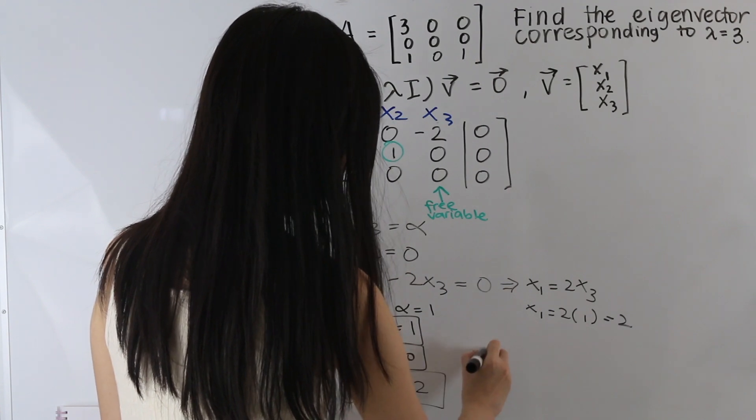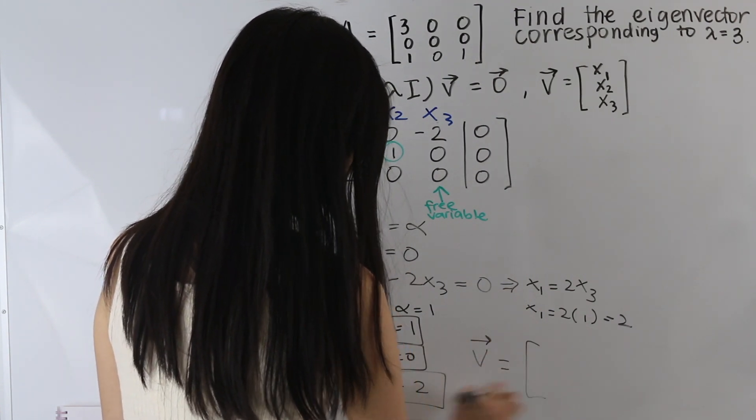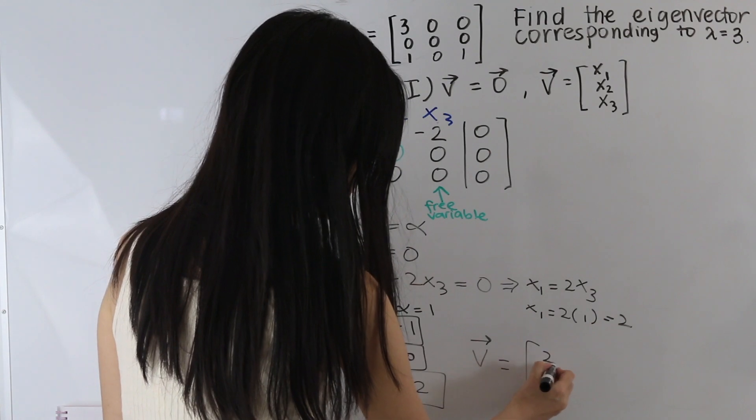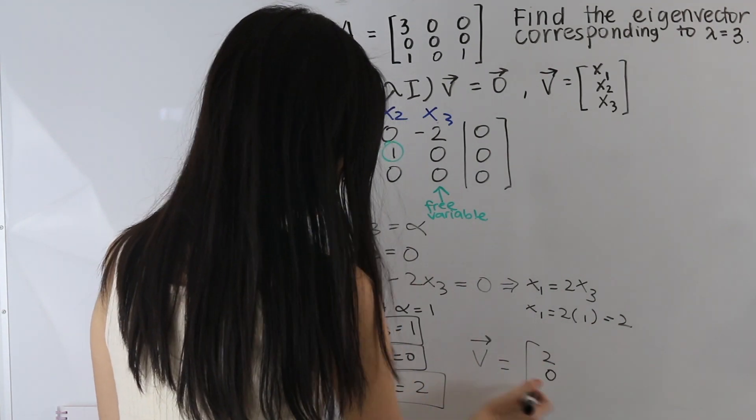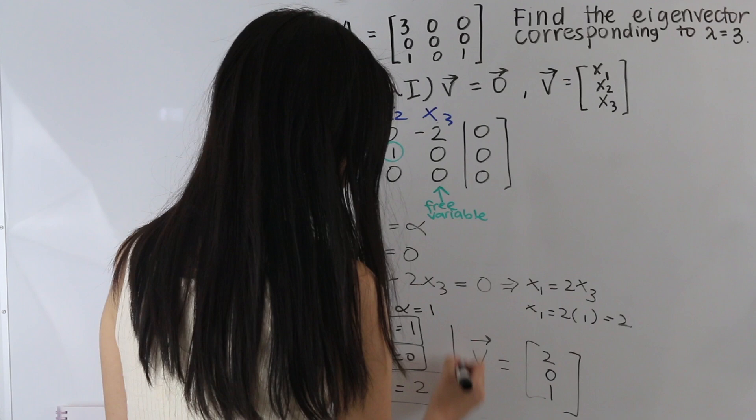So we have our eigenvector: x1 is 2, x2 is equal to 0, and we have x3 equal to 1. So that is our eigenvector.